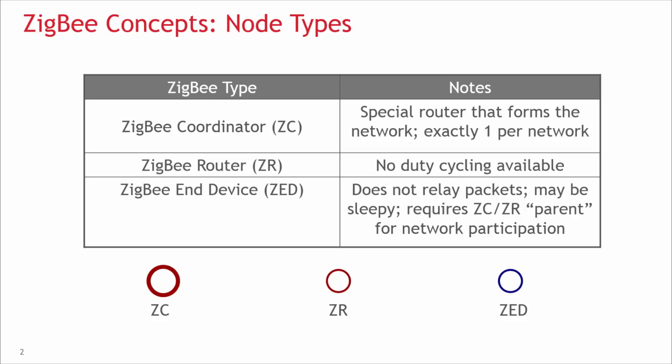End devices are devices that don't participate in any routing. The only concept of routing is that they have to send things to their parent or get things from their parent. When I say parent, I mean there is some other router node, potentially the coordinator, that is responsible for that end device — bearing the responsibility of forwarding messages out and proxying messages in. An end device relies on its parent for communication to the network. If that communication is lost, the end device has to go out and find a new parent and reattach itself to the network through this new parent.